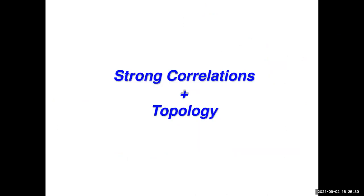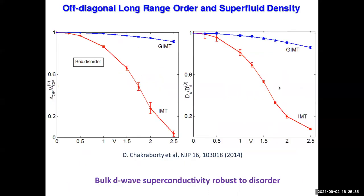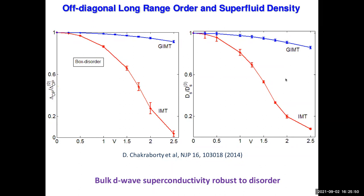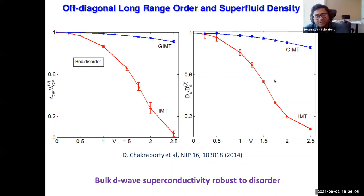Q&A: The off-diagonal long-range order and superfluid density are calculated in slightly different ways but behave very similarly. Regarding why box disorder is chosen: in experiments there can be various kinds of disorder (concentration disorder, in-plane or out-of-plane). The advantage of box disorder is that it has only one parameter quantifying the disorder strength, giving a clean physical picture that can be mapped to other models.